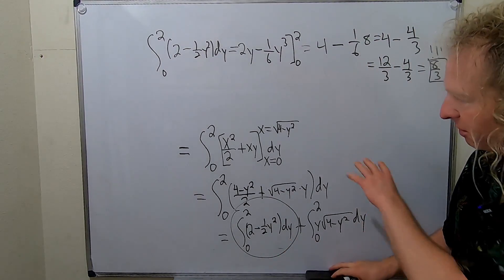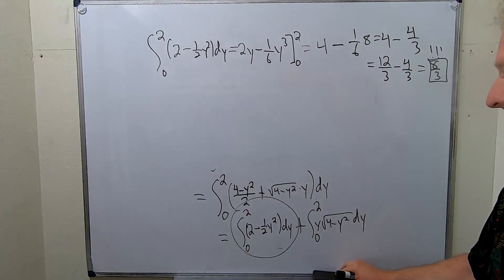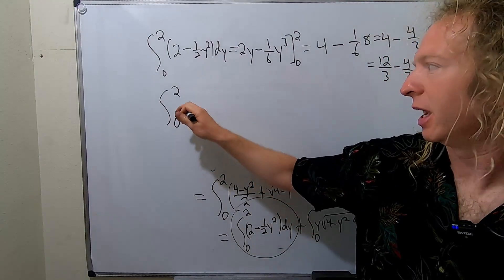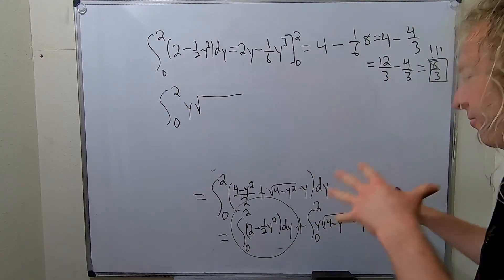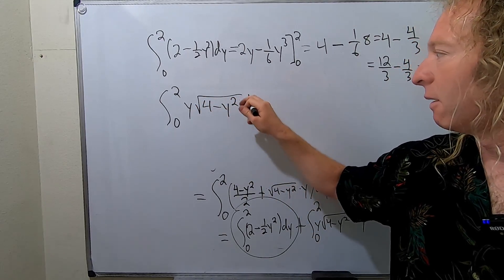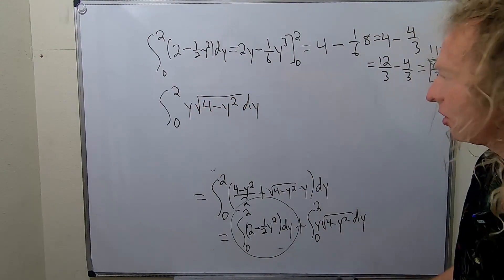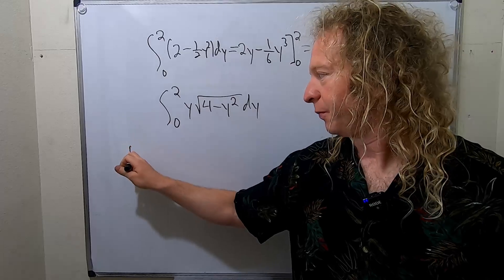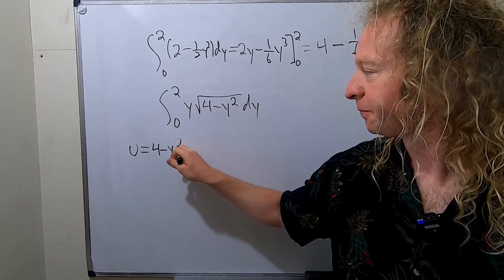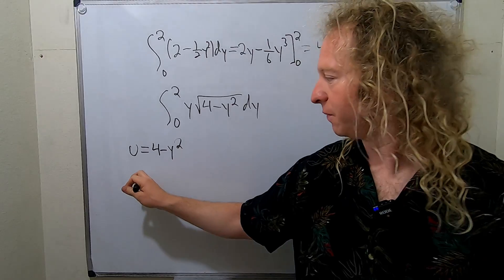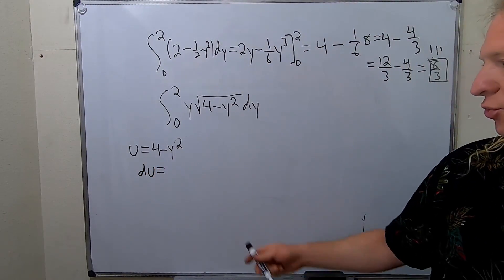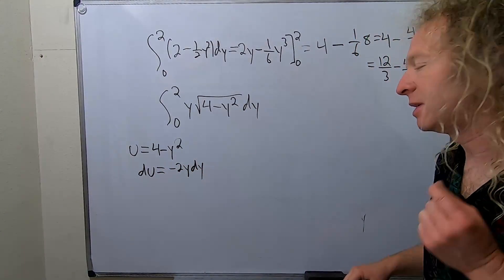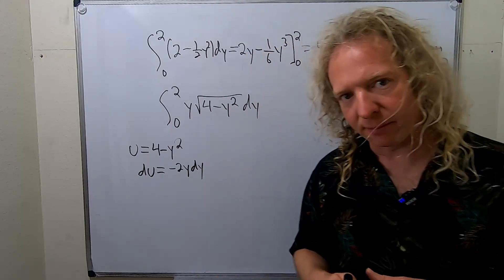That's not the final answer, but let's box that: 8 thirds. Now we have to work out the second integral, the definite integral from 0 to 2 of y times the square root of (4 minus y squared) dy. We need to make a u-substitution, so let u equal 4 minus y squared. Then du equals negative 2y dy.